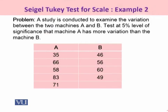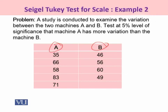The problem involves a study conducted to examine the variation between two machines, A and B, compared in terms of their mean efficiency. To test the mean efficiency, we first need to test whether the scale parameter of machine A is identical to that of machine B. We will test at a 5% level of significance whether machine A has more variation than machine B.